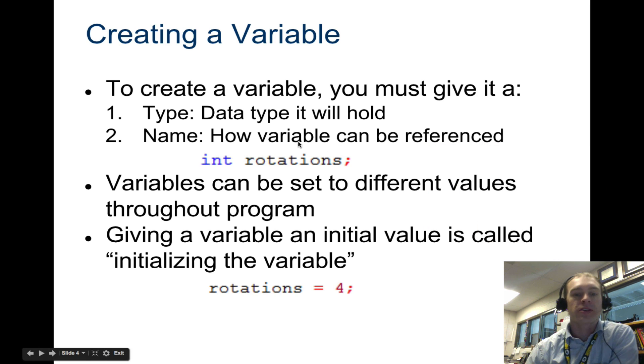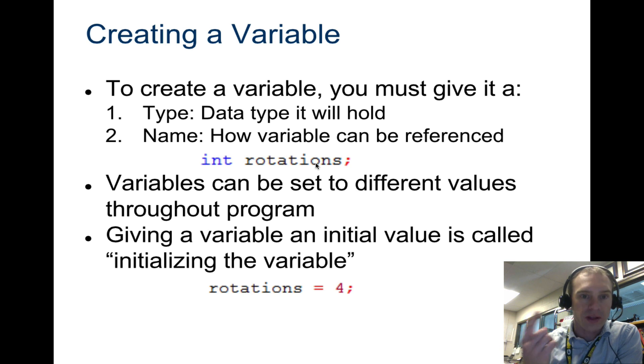So we're going to create a variable. You first have to give it a type, we're going to give this type int, then we name it. So we're going to call it rotations. So rotations would be a good one if you're talking about some type of quad encoder, the thing that counts how many rotations around.